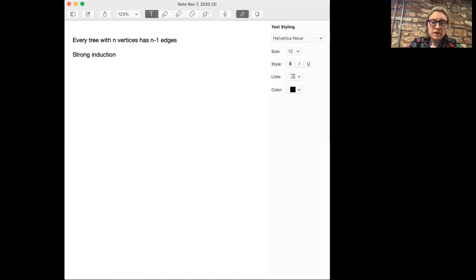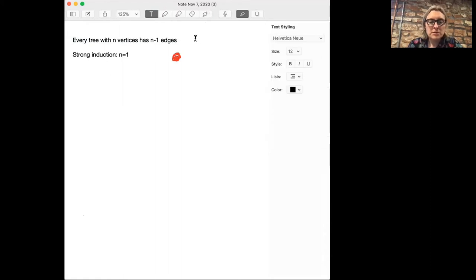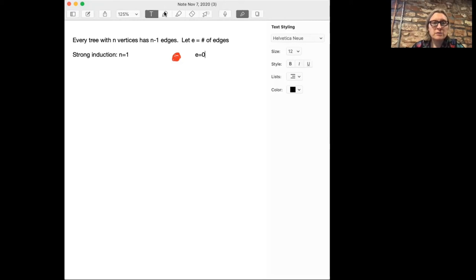We're going to start with the case n equals one. In that case, we only have one vertex. The number of edges, let's let e be the number of edges. So when n equals one, notice that e is zero. There are no edges at all on that tree with one vertex. In that case, we can say that our statement is true.